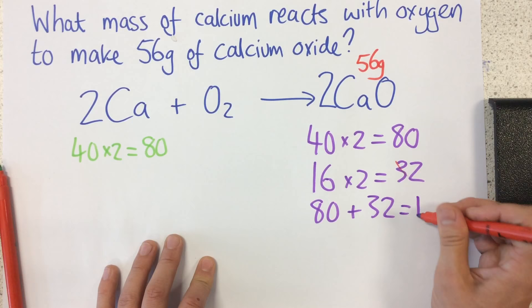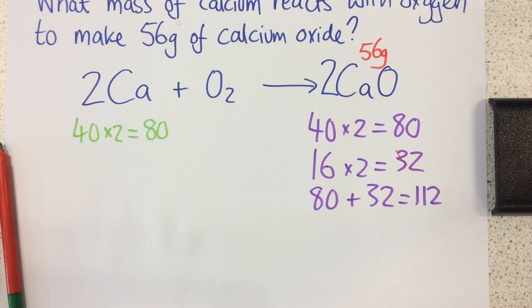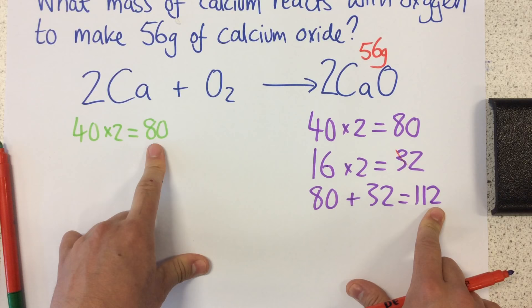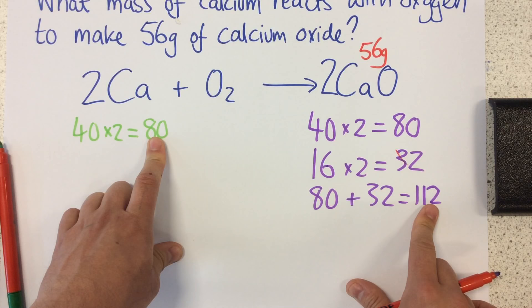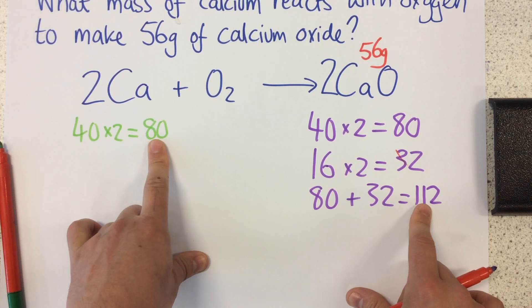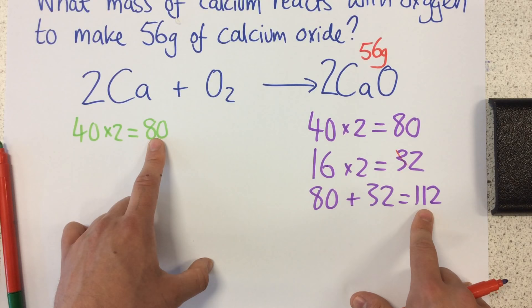So let's have a stop and think about what this means. These numbers are relative to each other, which means if we had 80 grams of this, we would make 112 grams of this. It also means if we had 80 tons of this, we would make 112 tons of this. So they just show them relative to each other, how they relate to each other.